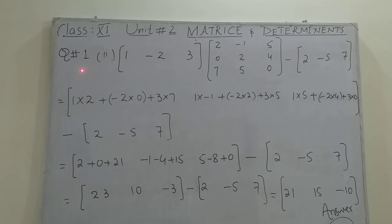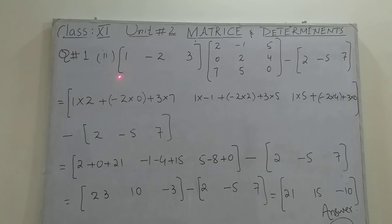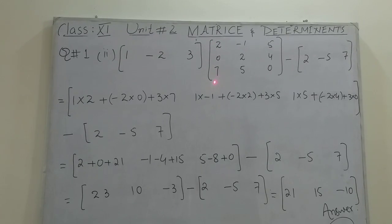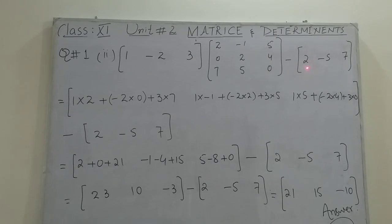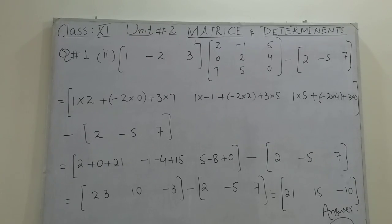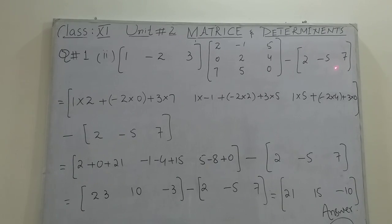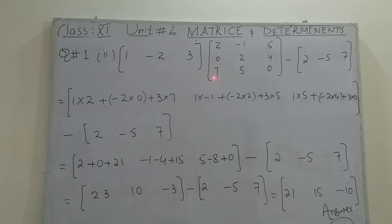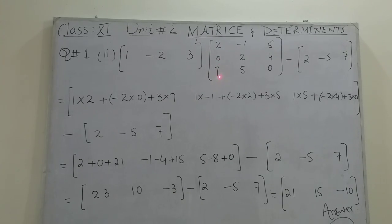Now part two of question number one: matrix [1, -2, 3] into matrix [2, 0, 7; -1, 2, 5; 5, 4, 0] minus matrix [2, -5, 7]. We first multiply the two matrices and then subtract the third matrix. Checking compatibility: the first matrix has three columns and the second matrix has three rows, so multiplication is possible.